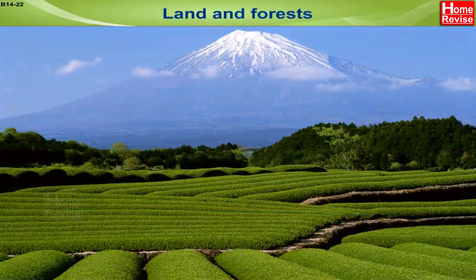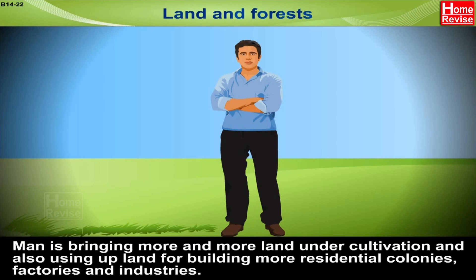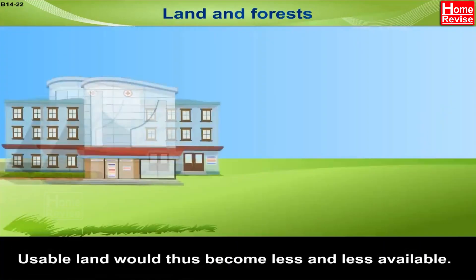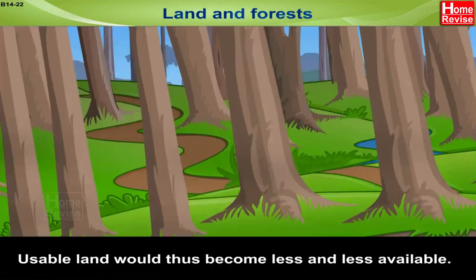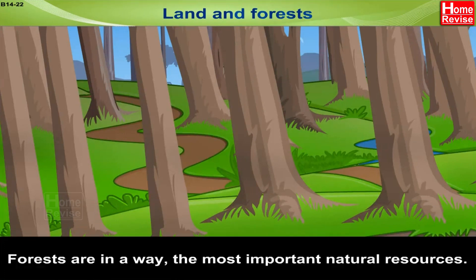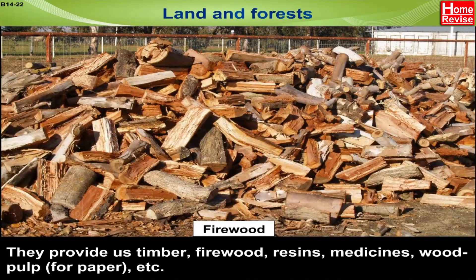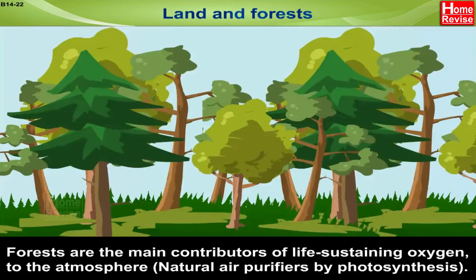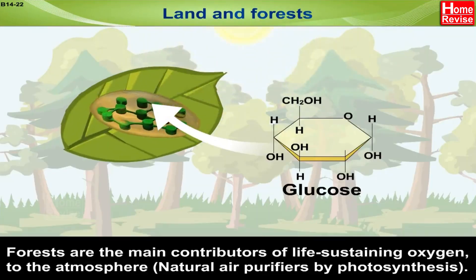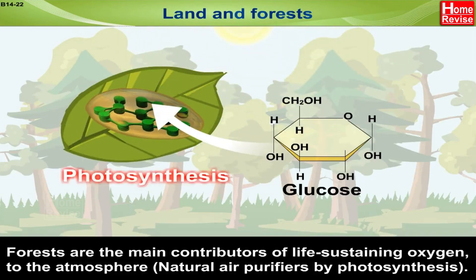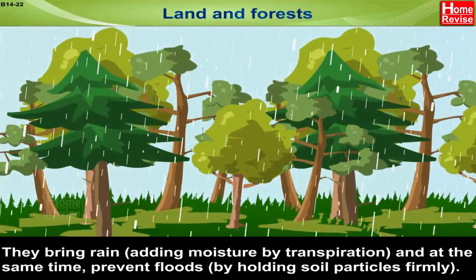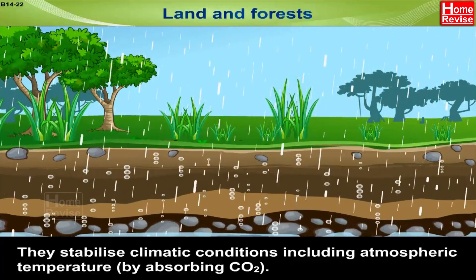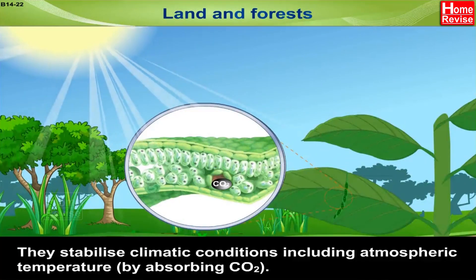Land and forest: Man is bringing more and more land under cultivation and also using land for building residential colonies, factories and industries, so usable land would become less and less available. Forests are the most important natural resources — they provide timber, firewood, resins, medicines, wood pulp for paper, etc. Forests are main contributors of life-sustaining oxygen through photosynthesis, bring rain by adding moisture through transpiration, prevent floods by holding soil particles firmly, and stabilize climatic conditions including atmospheric temperature by absorbing CO2.